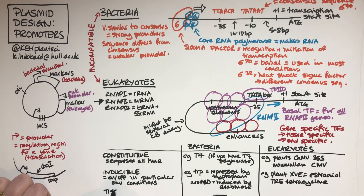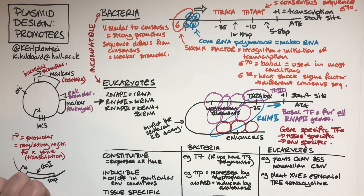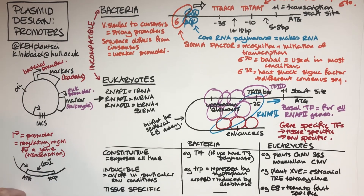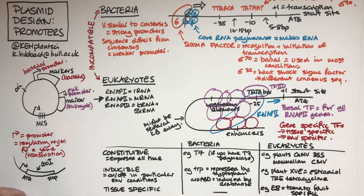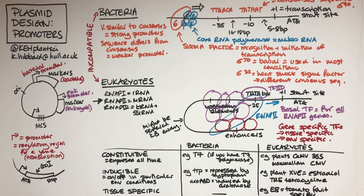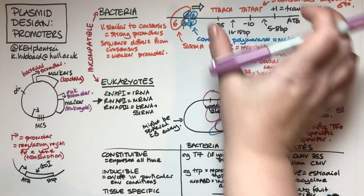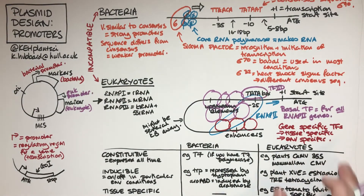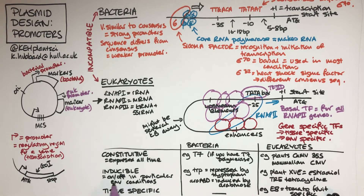The other thing you might want in a eukaryote is something tissue-specific. For example, if you were trying to manipulate fruit ripening, you would want a promoter like the E8 promoter, which is a tomato fruit-specific promoter. You might not want the gene switched on in the roots - you'd only want it switched on in the fruit. Bacteria are single-celled so that's less relevant, but in a eukaryote you might want tissue-specific expression.